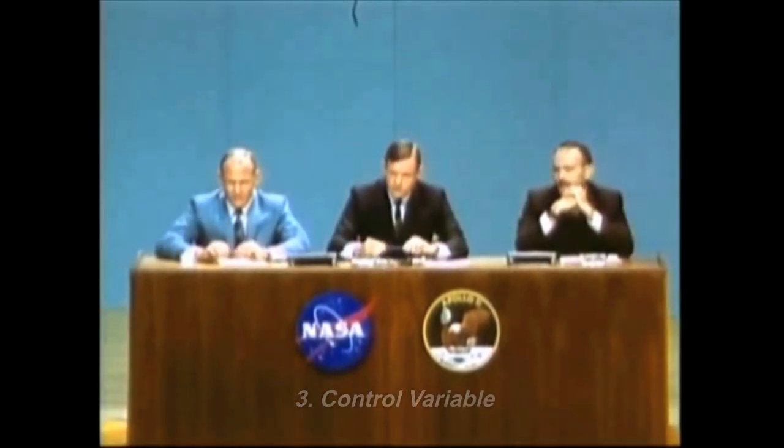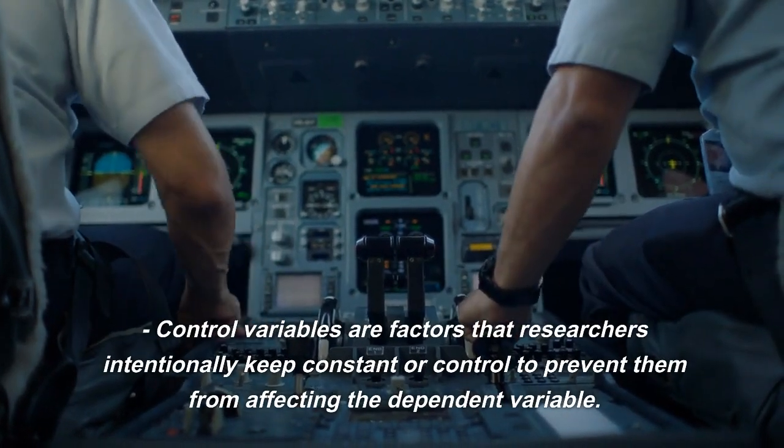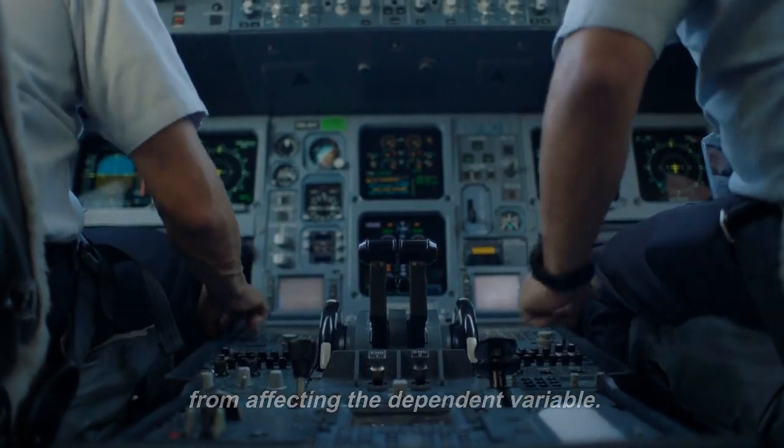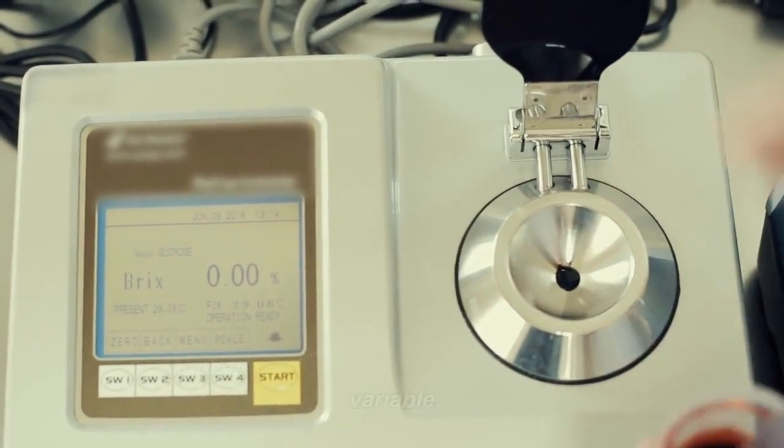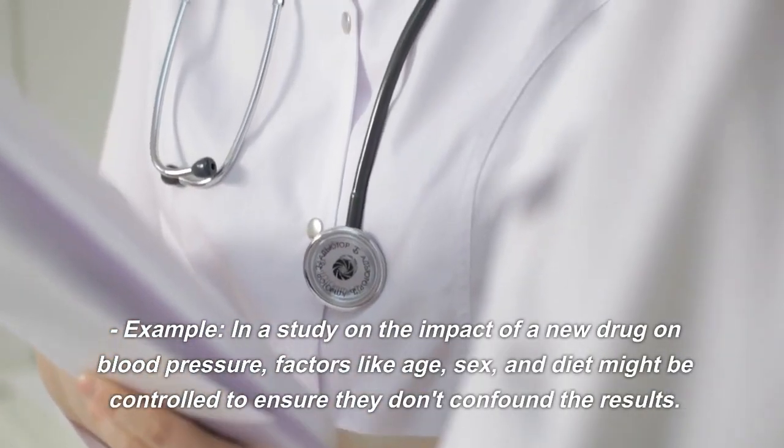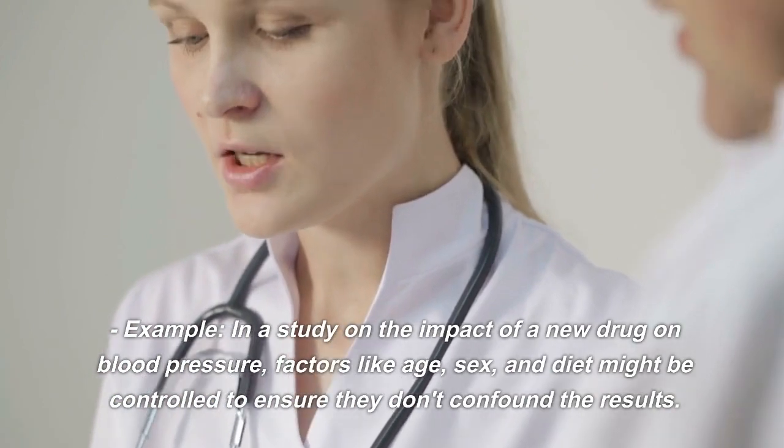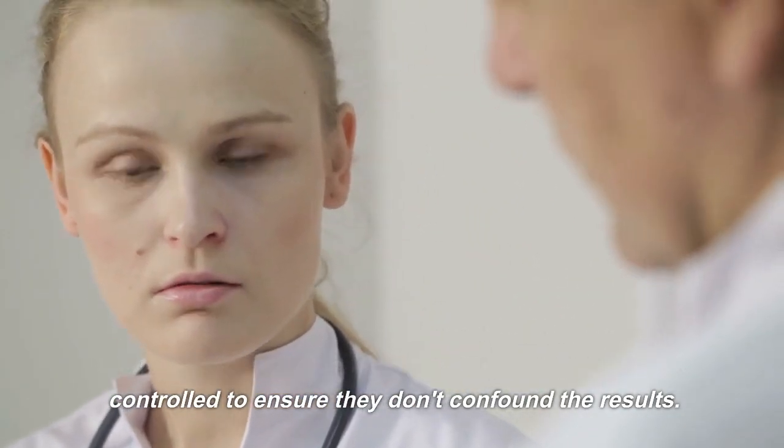Control variable. Control variables are factors that researchers intentionally keep constant or control to prevent them from affecting the dependent variable. They help isolate the effect of the independent variable. Example: In a study on the impact of a new drug on blood pressure, factors like age, sex, and diet might be controlled to ensure they don't confound the results.